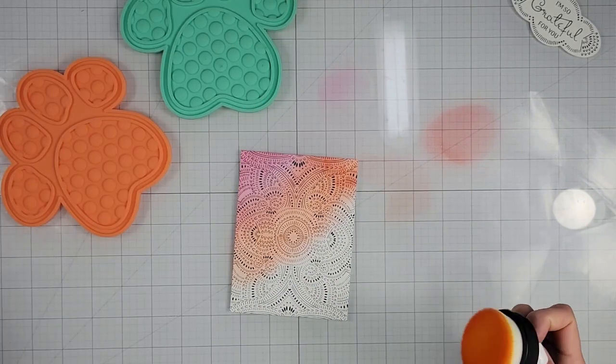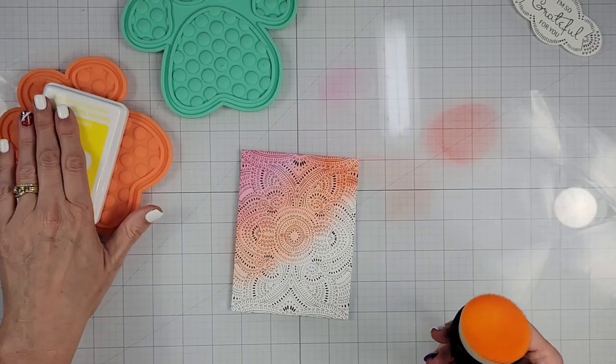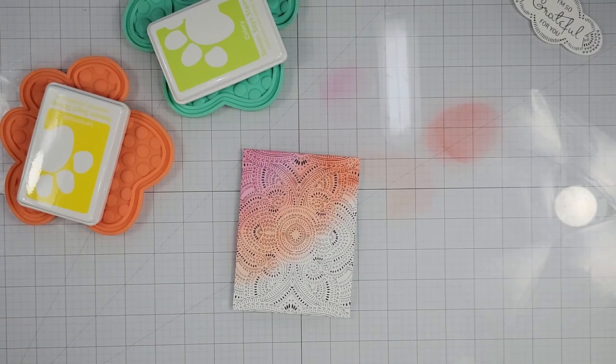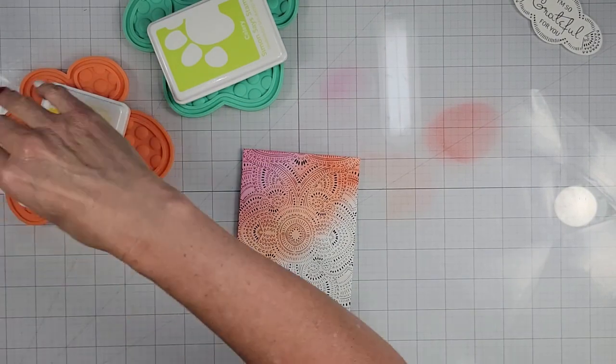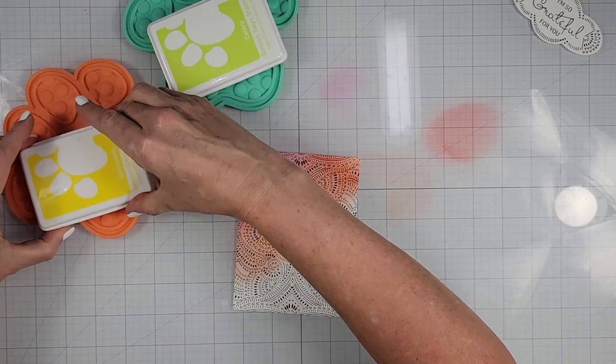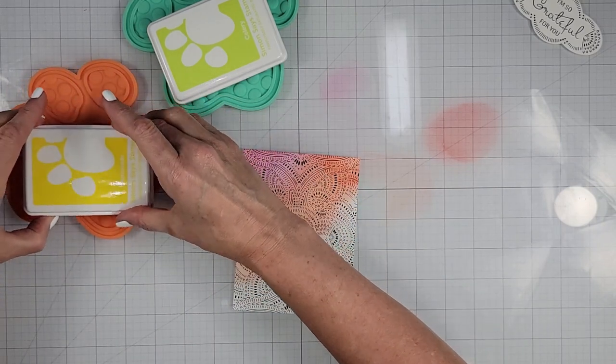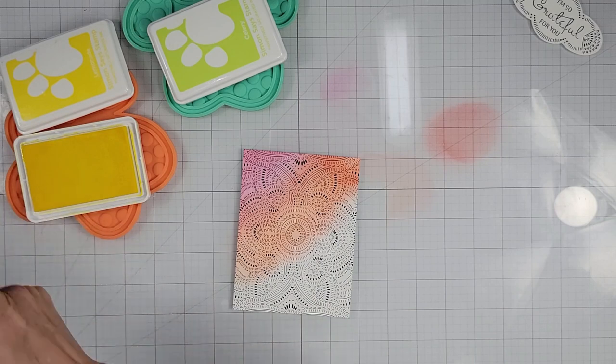I'm going to set those aside. I'm going to grab my next two colors, which is sunbeam and celery. So we'll start with the, oh, no, not sunbeam, lemonade. So I'm going to start with the lemonade.